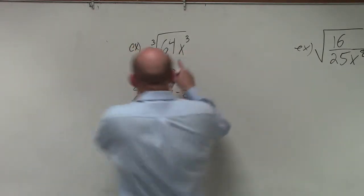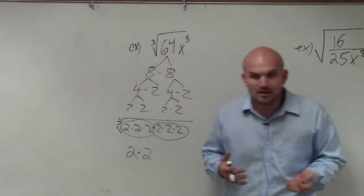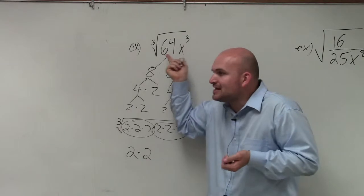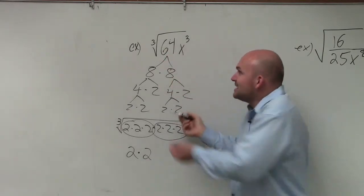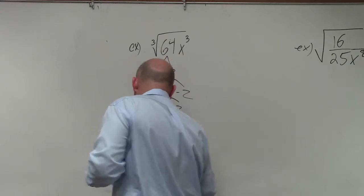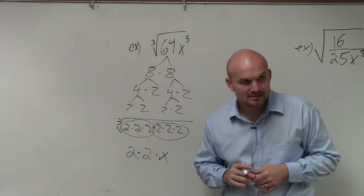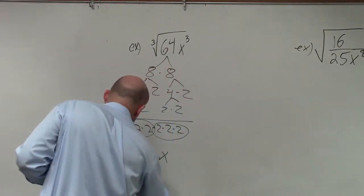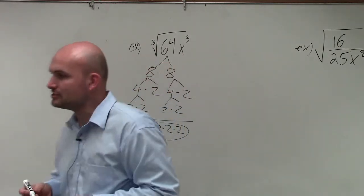I'm multiplying 2 by itself three times here, so that answer is 2, and doing it again gives 2. Now I need to take the cube root of x cubed. What number multiplied by itself three times gives you x cubed? x. So the cube root of x cubed is x. Therefore, my final answer is 2 times 2, which is 4, so the final answer is 4x.